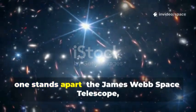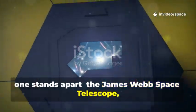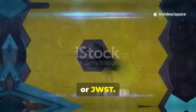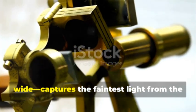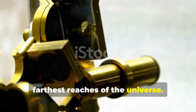Among all our telescopes, one stands apart, the James Webb Space Telescope, or JWST. Its giant golden mirror, over 6 meters wide, captures the faintest light from the farthest reaches of the universe.